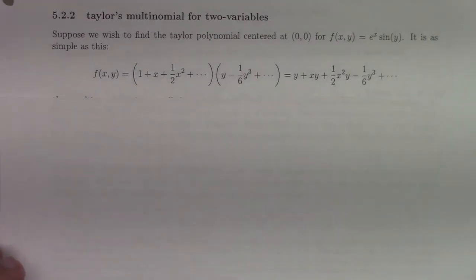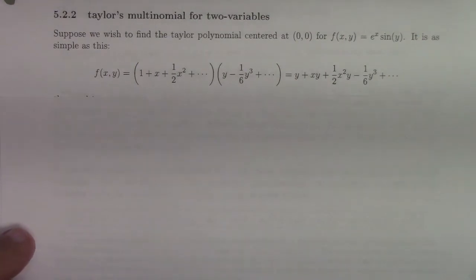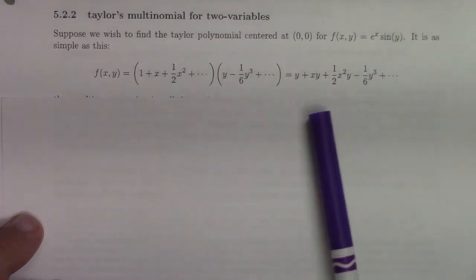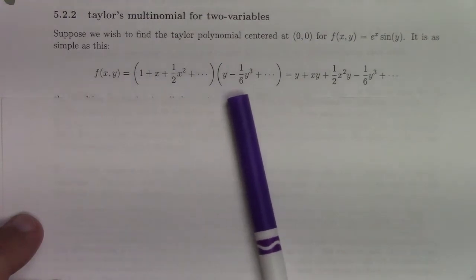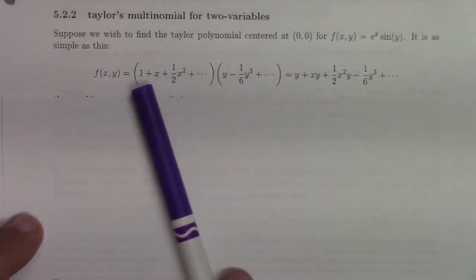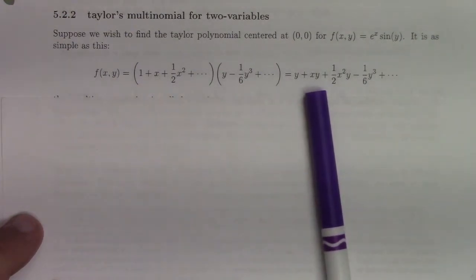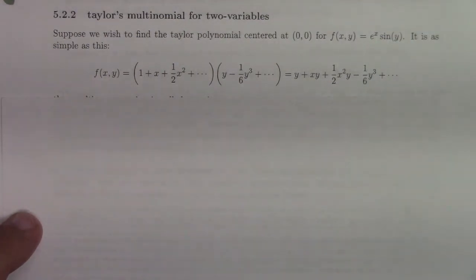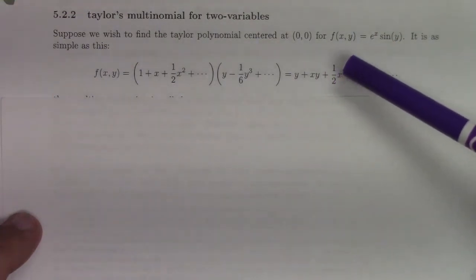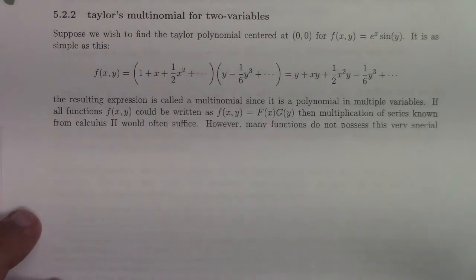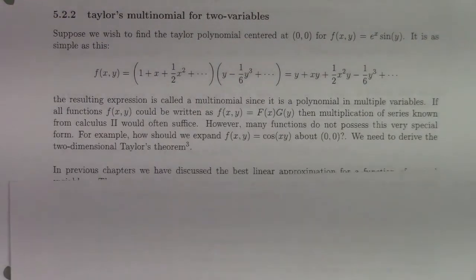The basic trick to find power series for functions of two variables is just to use the one variable stuff and substitute. Then basically multiply out and keep terms up to whatever order you're interested in. So here I have e to the x times sine of y. This is the power series for e to the x, that's the power series for sine of y. The lowest order term is y, and then I've got x times y is xy. Already these first two terms are it up to the formulas I was writing on the first minute of this lecture. This is just the power series for this function up to third order. It's called a multinomial, since it's a polynomial in multiple variables.